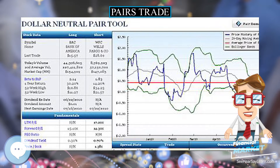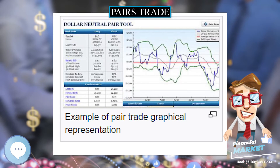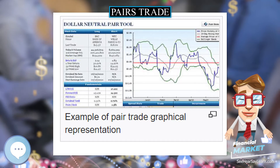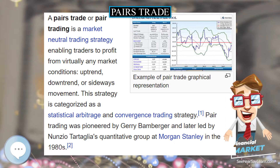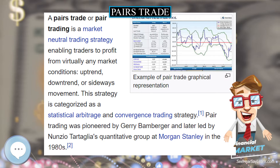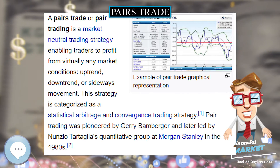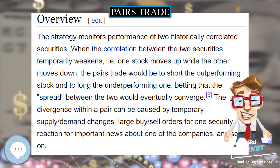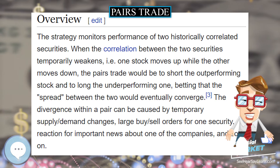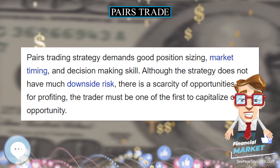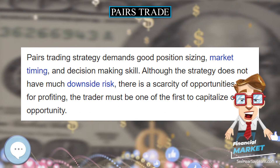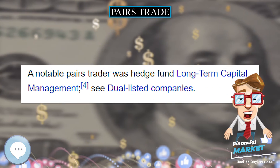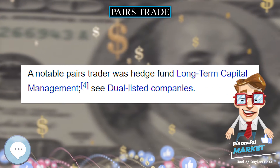If the price of Pepsi rose to close that gap in price, the trader would make money on the Pepsi stock, while if the price of Coca-Cola fell, they would make money on having shorted the Coca-Cola stock. The reason for the deviated stock to come back to original value is itself an assumption — it is assumed that the pair will have a similar business relationship as in the past during the holding period of the stock.